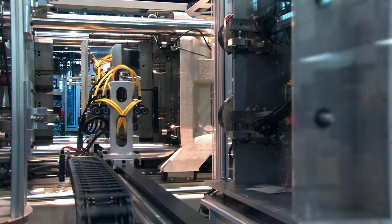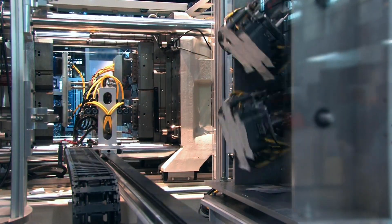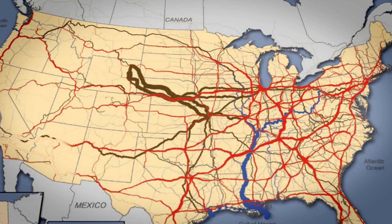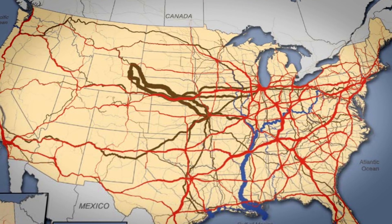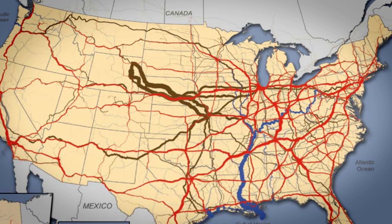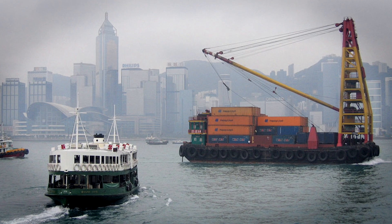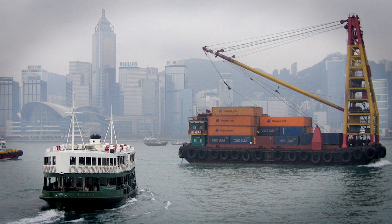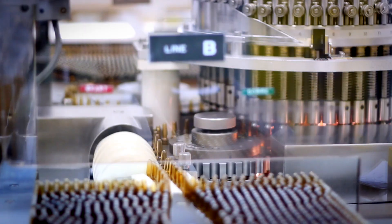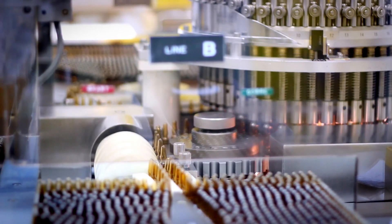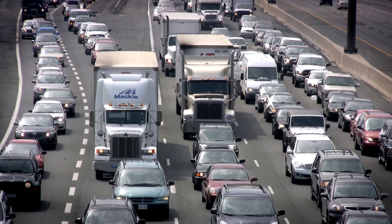So what is logistics and supply chain management? Basically, it's the art and science of getting products from where they were made to where you, the consumer, want them to be. Firms have become more global in terms of where they source materials, where they manufacture those products, and where they sell their finished goods.